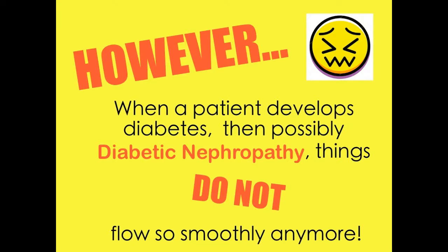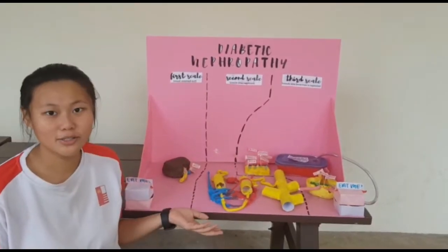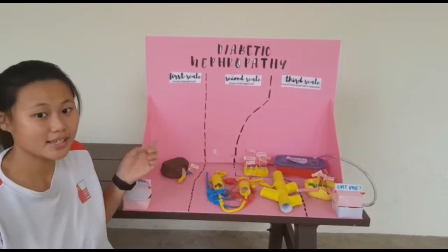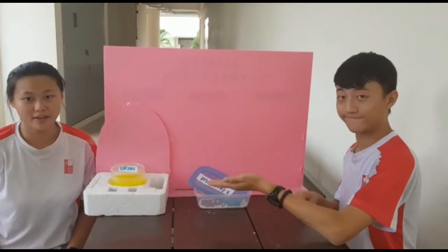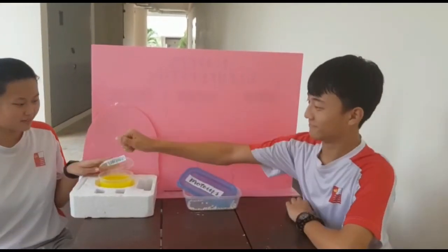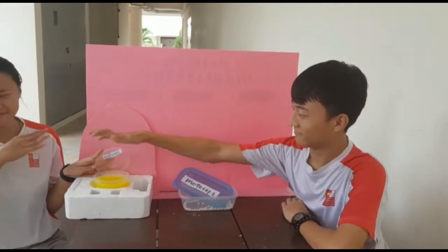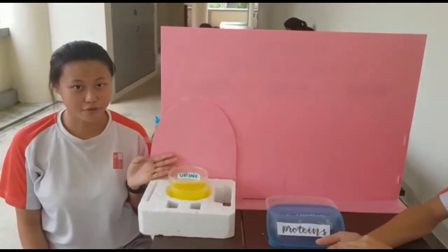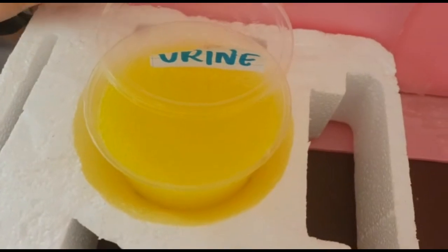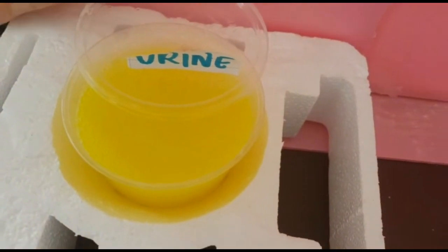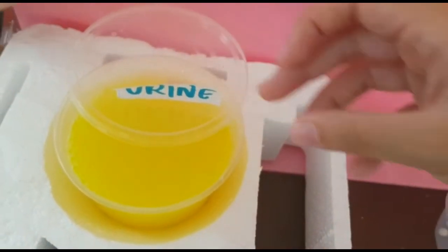However, when a patient develops diabetes and then possibly diabetic nephropathy, things do not flow so smoothly anymore. Diabetic nephropathy occurs when the kidneys become damaged, allowing albumin, a protein made by the liver, to filter into the urine. The protein found in the urine can also cause it to become foamy, because the protein in the urine reacts with air to form foam.